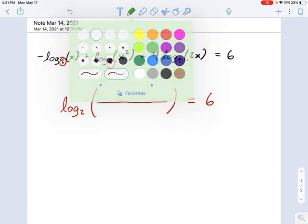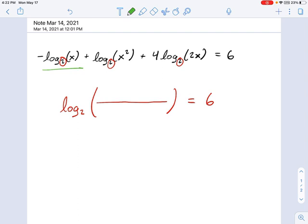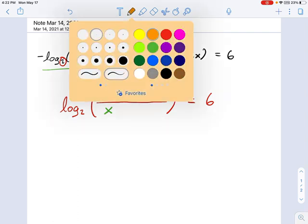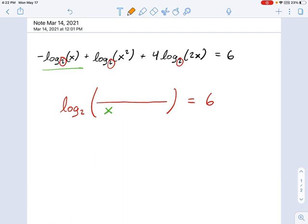I'm going to start using different colors here. Let's say I'm looking at this term first. I have a negative log of x. Well, that means the argument x goes on the bottom of this megalog. And in the next one, I have a positive log of x squared. So that means I have an x squared term on top. And in the last one, the third one over here, take a look what we have.